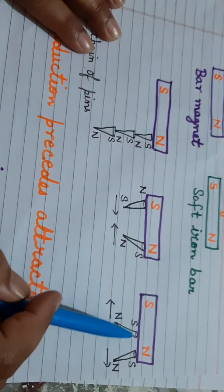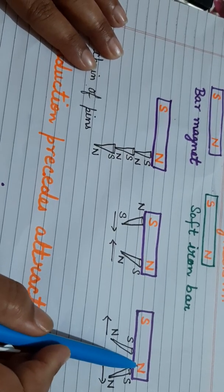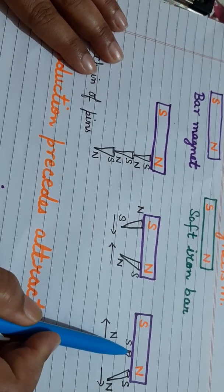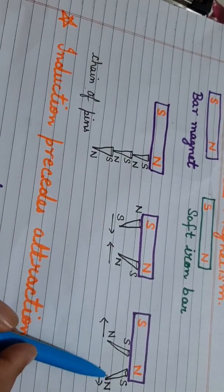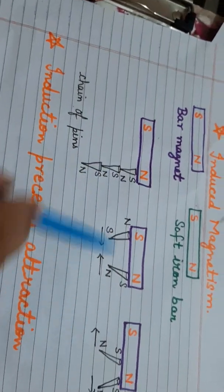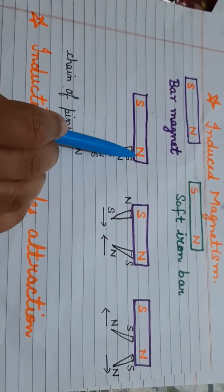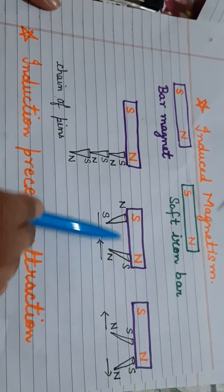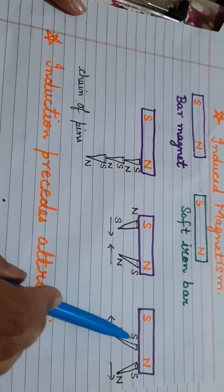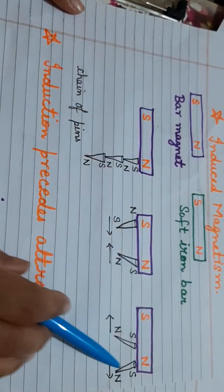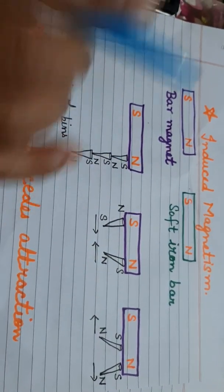In case 3, two pins are both attached to one pole — say the north pole. Both pins attain south polarity at the near end and north polarity at the far end. Since north and north are like poles, they repel each other. So in all three cases it is a demonstration of induced magnetism: case 1 forms a chain, case 2 shows unlike poles attracting, and case 3 shows like poles repelling.